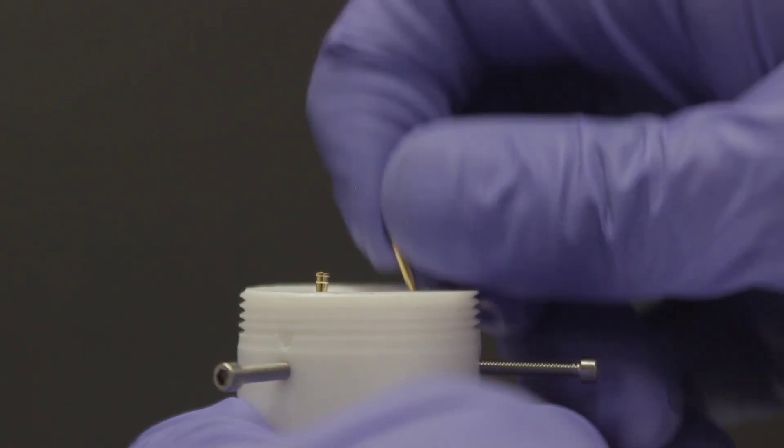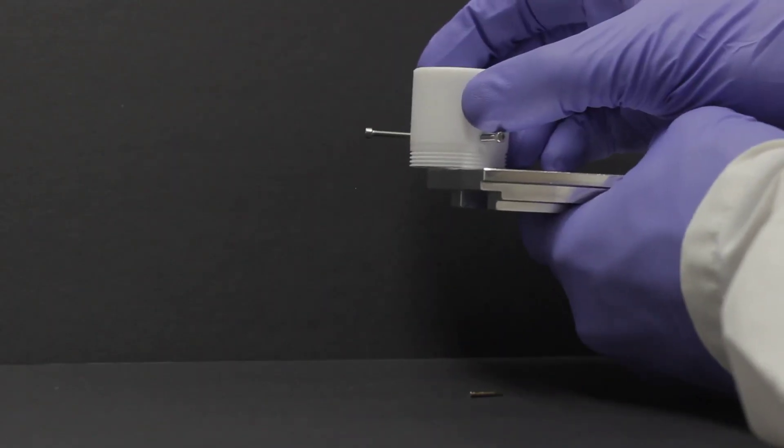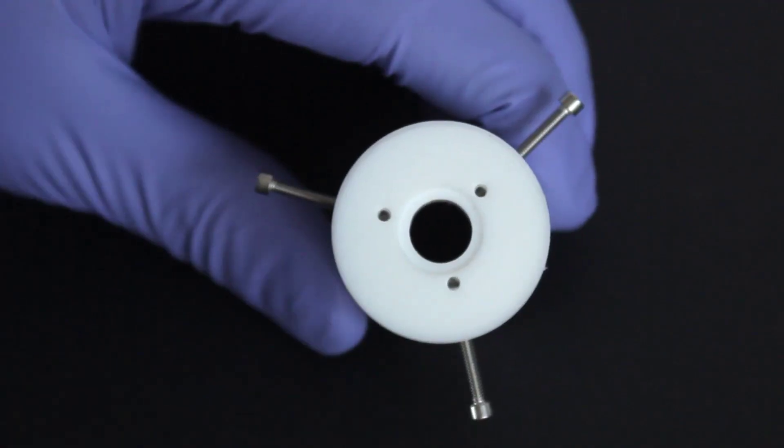If a pin falls to the bottom of a hole, tap the cell base on a hard surface to dislodge the pin. Then tighten the contact screw some more and reinstall the pin.